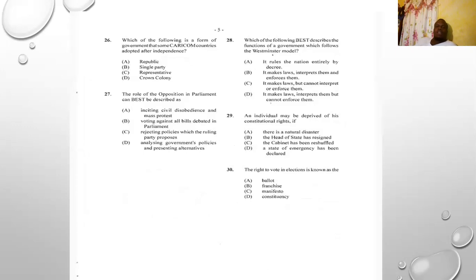Number twenty-six: which of the following is a form of government that some CARICOM countries adopted after independence? A) republic, B) single party, C) representative, D) crown colony. Crown colony was before independence. The old representative system predated crown colony. Single party government is associated with autocratic government or communism. The only one we are left with after independence is A) republic.